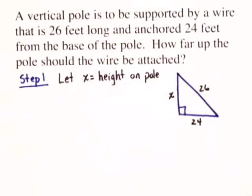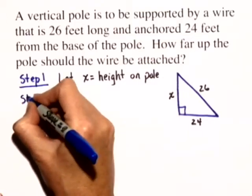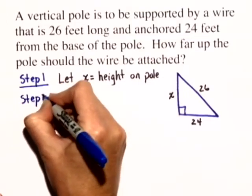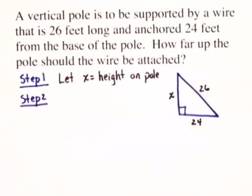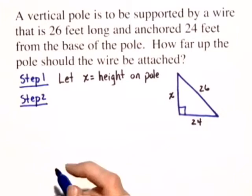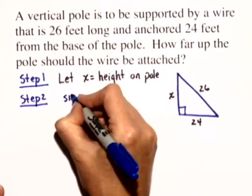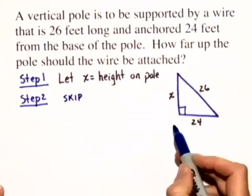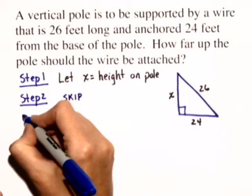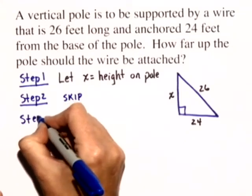Okay, now we're ready for step two. Normally, in step two, we let any other unknown quantities be defined in terms of X. But in this case, we can skip step two because there are no other unknown quantities in our triangle. So we'll go ahead and move on to step three.